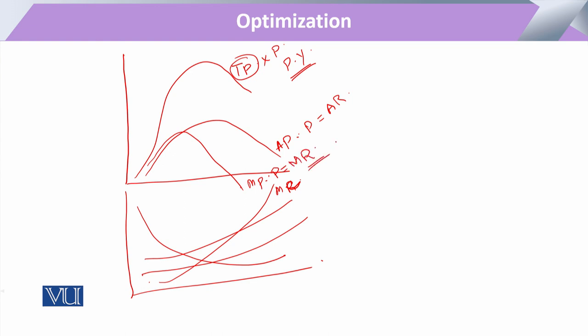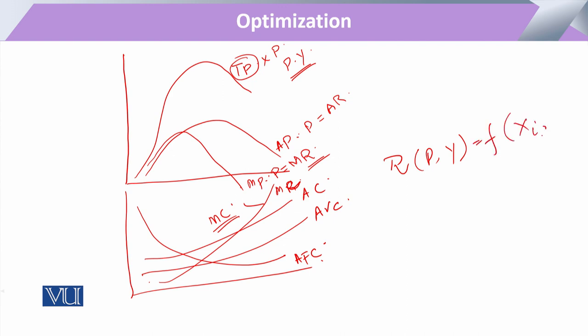To maximize profit, it will be maximized through the working of this output. This output is produced with the combination of various factors of production, and those factors of production incur a cost. If we have to utilize revenue — which is the function of P×Y — that will be a function of X1 and X2. When we optimize this revenue with the utilization of X1 and X2, we work out the impact of a change in the amount of input on the change in revenue.